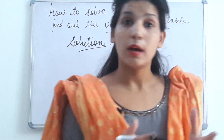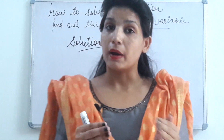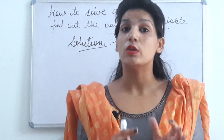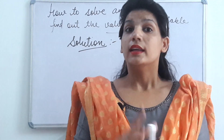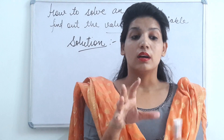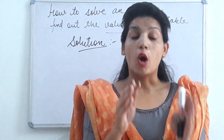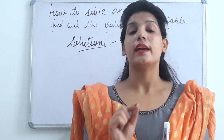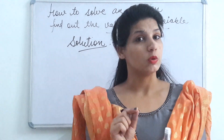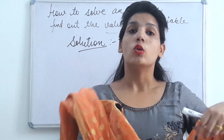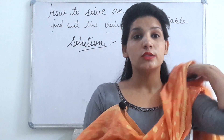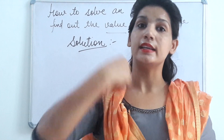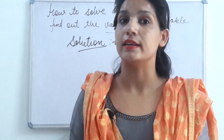Let's take a brief description of the equation we studied in the last class. The most common feature of an equation is that there is an equal sign, and there are two sides — the first is our left hand side and the second is our right hand side.